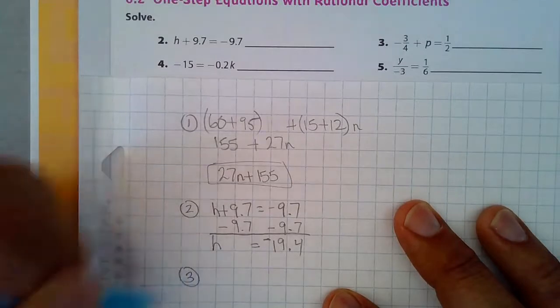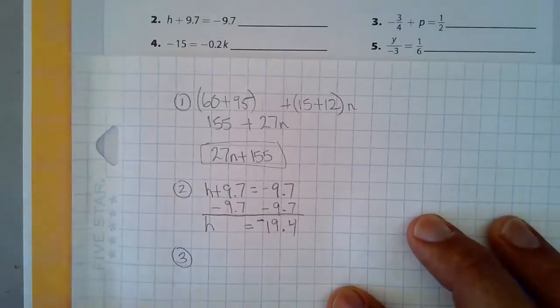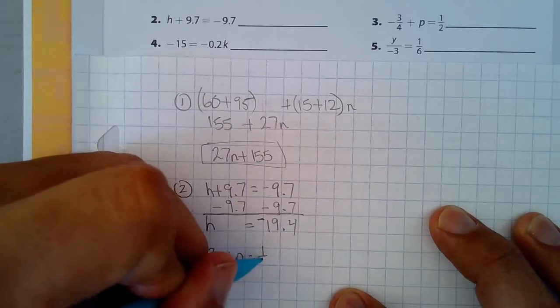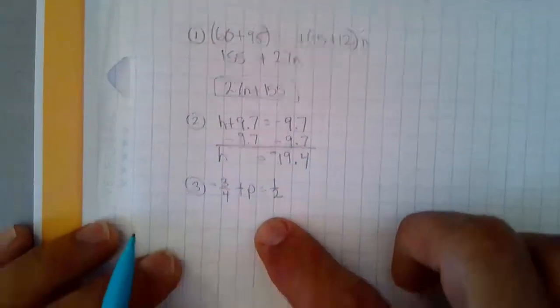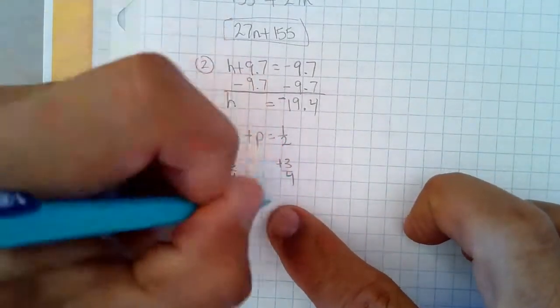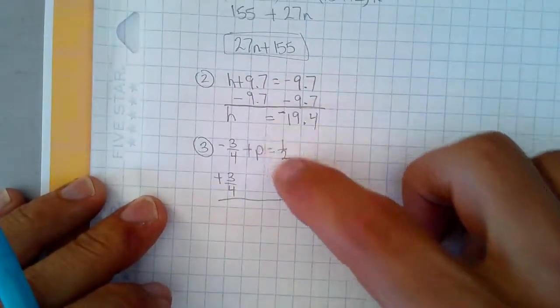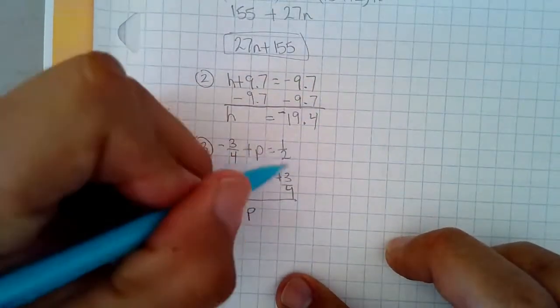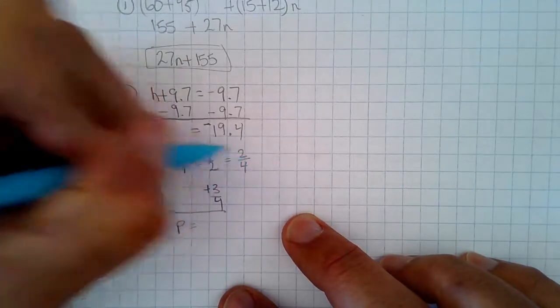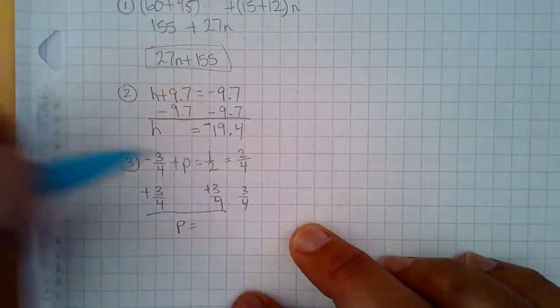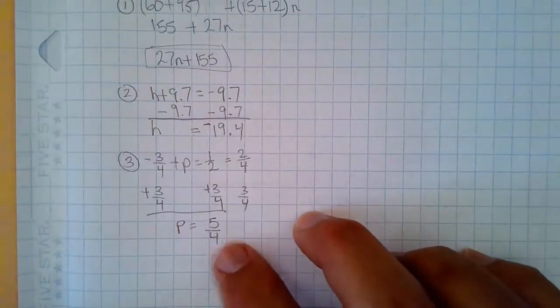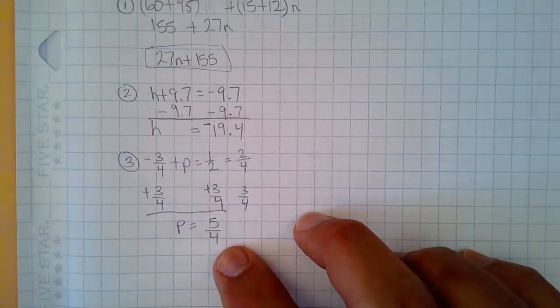Number three is negative three-fourths plus p equals one-half. To solve this one, I'm going to have to add three-fourths to both sides of the equal sign. And just like here, that was zero. This is going to be zero and p is now isolated. And one-half plus three-fourths, well, common denominator is necessary. That's two-fourths plus three-fourths. That would give me five-fourths total. And five-fourths is totally acceptable.